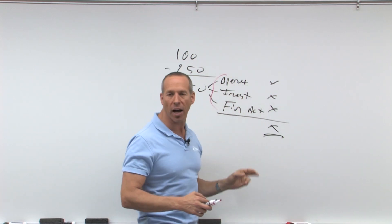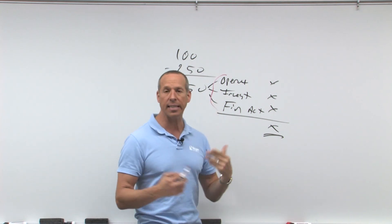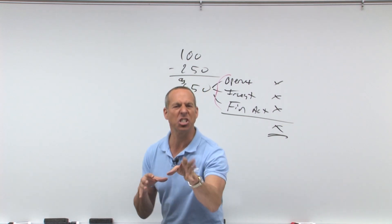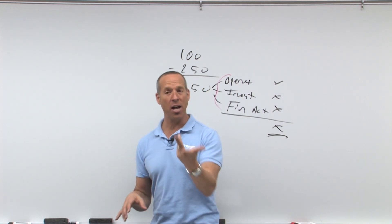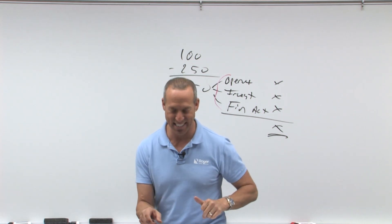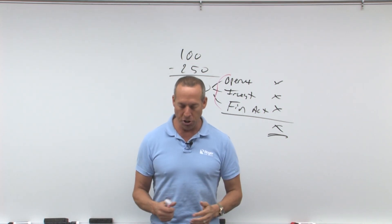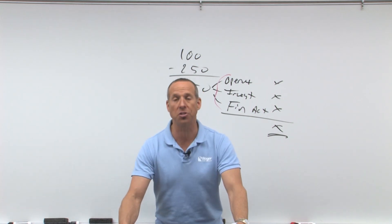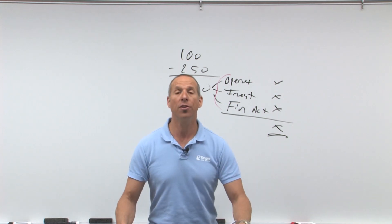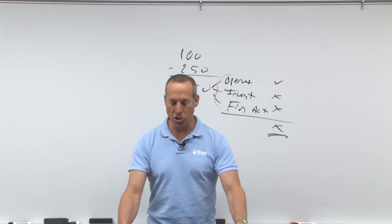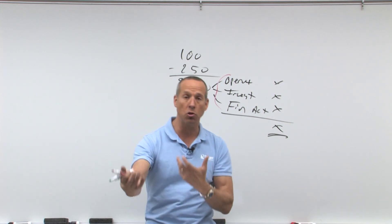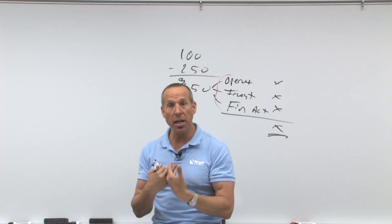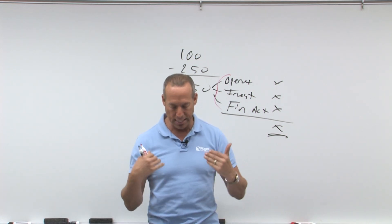The statement of cash flows is required whenever a company presents the results of operations — so if you provide an income statement, you've got to have a statement of cash flows. The purpose is to provide inflows and outflows, sources and uses: what is the source of money coming in, what is the use of money going out, where did the money come from, where is it going to? Those are our sources and uses.